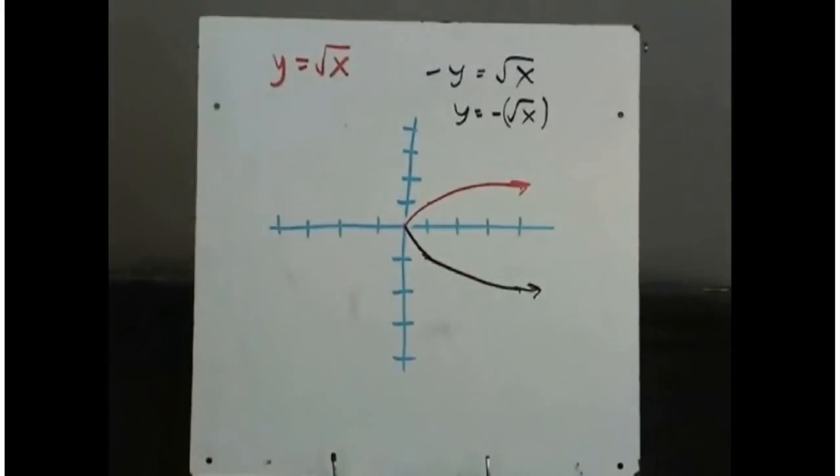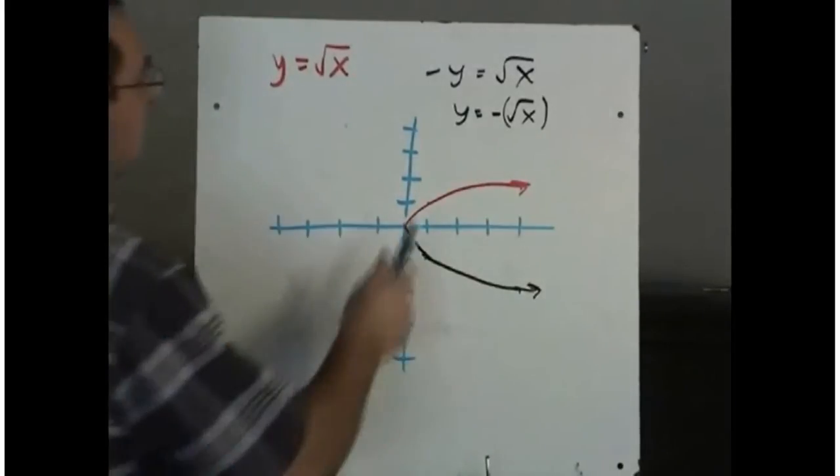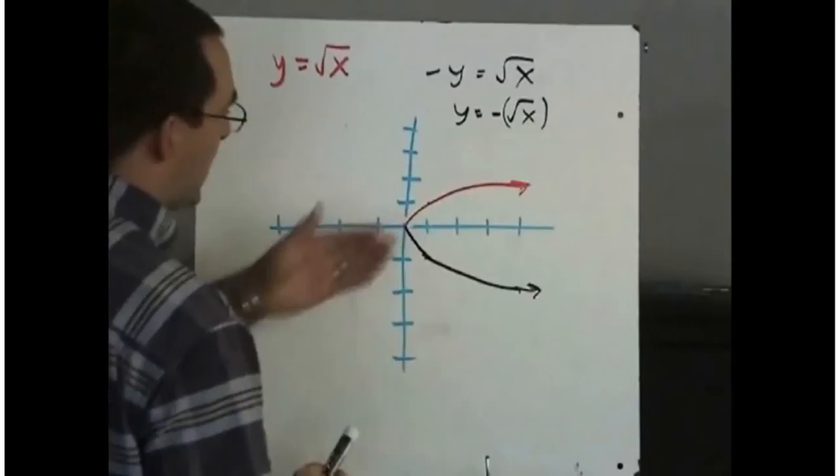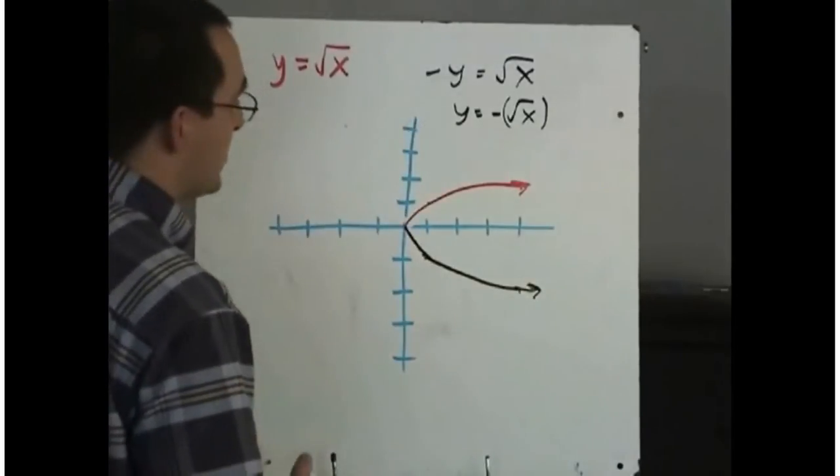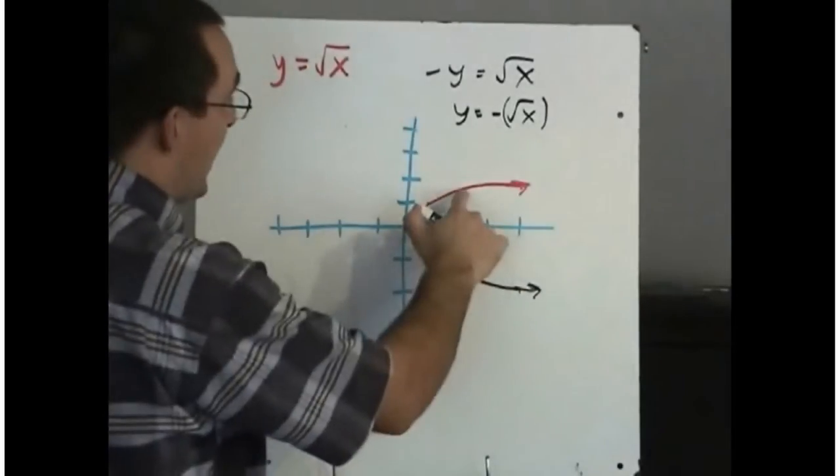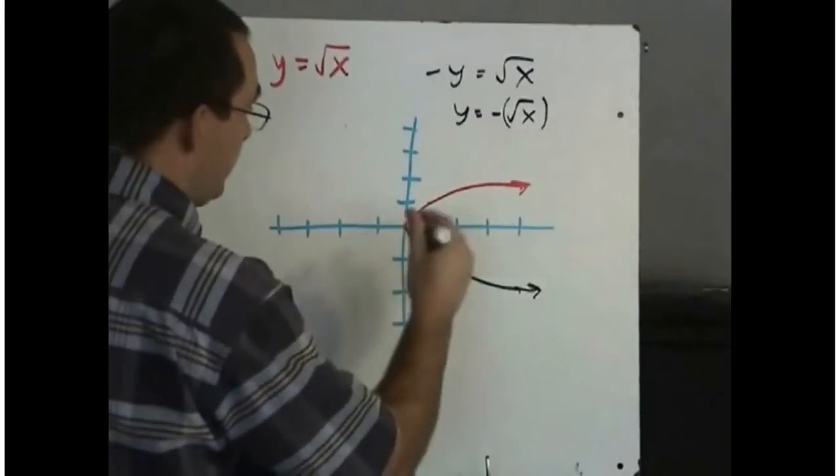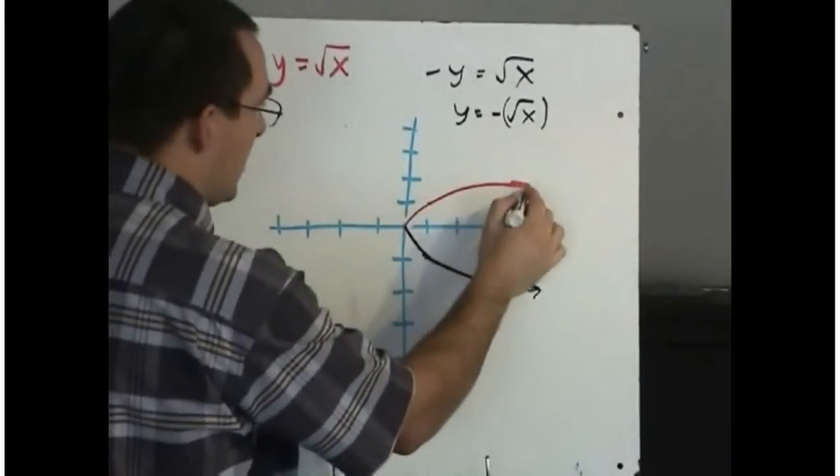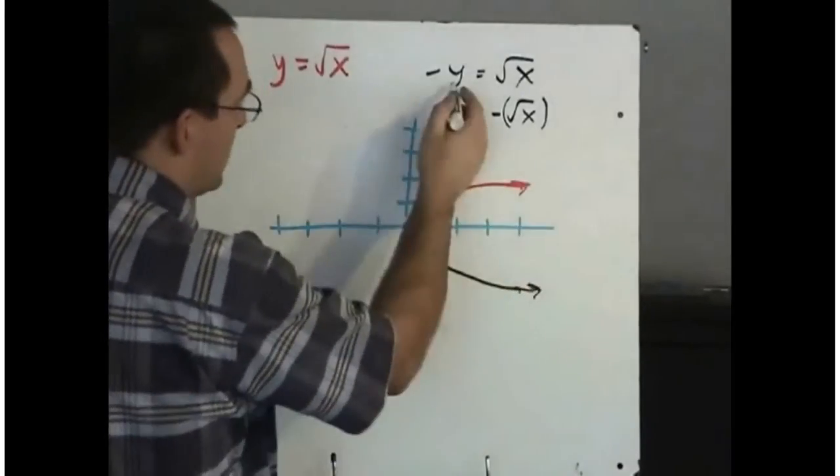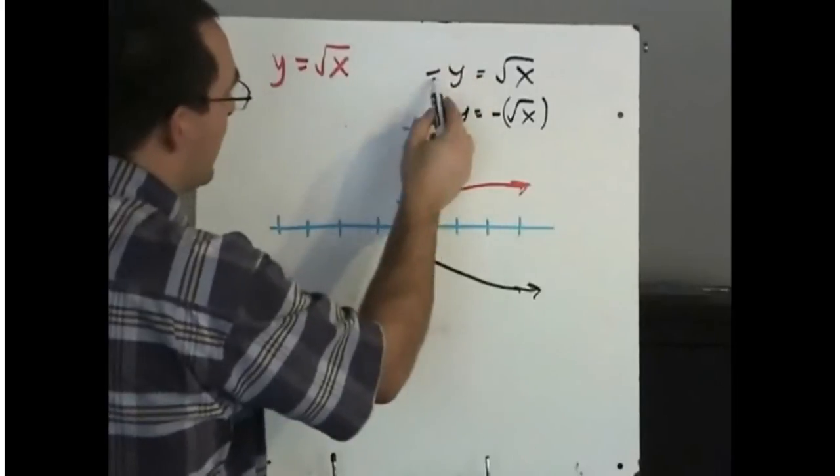And so as you would probably guess, when we replace y with minus y, the graph gets reflected about the x axis. All of the y values up here change their sign. That's what we did. We changed the sign of the y value by making it negative.